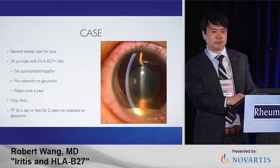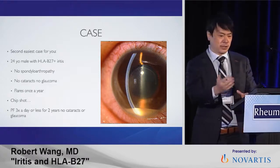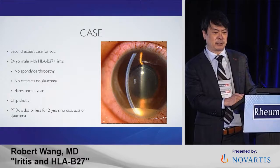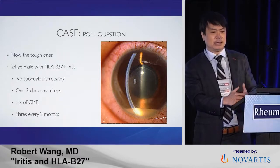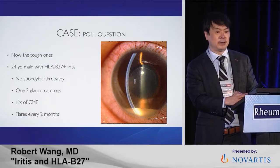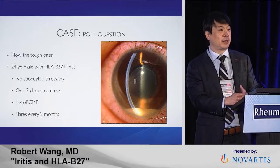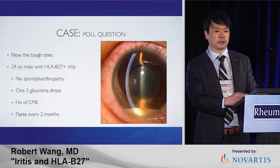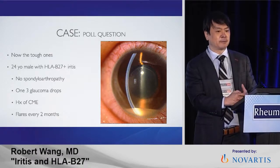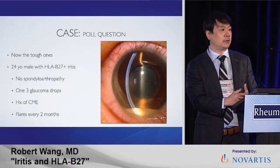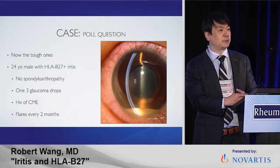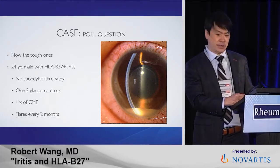The tough case: a 24-year-old male, no spinal arthropathies, but one eye requires three different eye drops to control pressure. He also has a history of cystoid macular edema and keeps flaring. This one gets a little tougher. If we use topical drops, we already know he has glaucoma and little wiggle room. Even without spinal arthropathies, this is the one I might send to you and say I need systemic treatment.